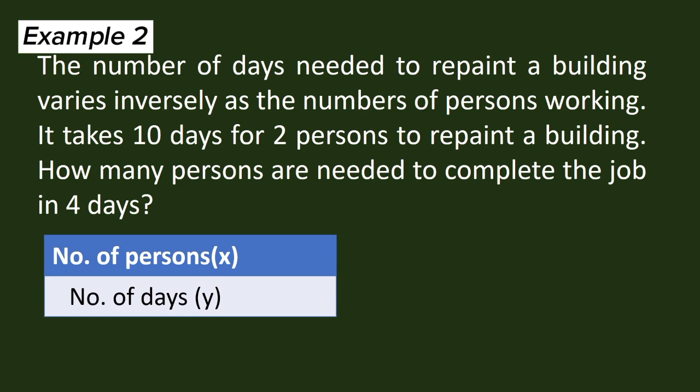We have this table of values. X for the number of persons and Y for the number of days. When X is 2, Y is 10. And X is unknown when Y is 4. Since we have inverse variation, we will use this formula: Y equals K over X, or XY is equal to K. And we begin by looking for the value of K, and we will use the value of X and Y to solve for K.